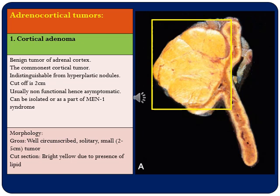Cortical adenomas can be either isolated or part of MEN1 syndrome. Morphologically, grossly these tumors are well-circumscribed, usually solitary, and small — two to five centimeters in size — though the minimum size to qualify as an adrenal cortical adenoma is two centimeters; less than that is labeled a hyperplastic nodule. On cut section these tumors are bright yellow because of the high lipid content in these cells.